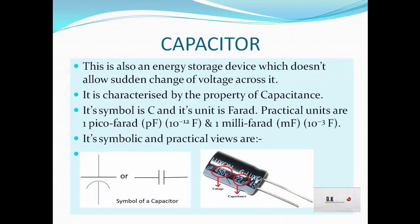A capacitor is an energy storage device which doesn't allow sudden change of voltage across it. If a voltage is already existing across a capacitor and we try to change it, the voltage will not change instantly. This property is called capacitance, its symbol is C, and its unit is Farad.